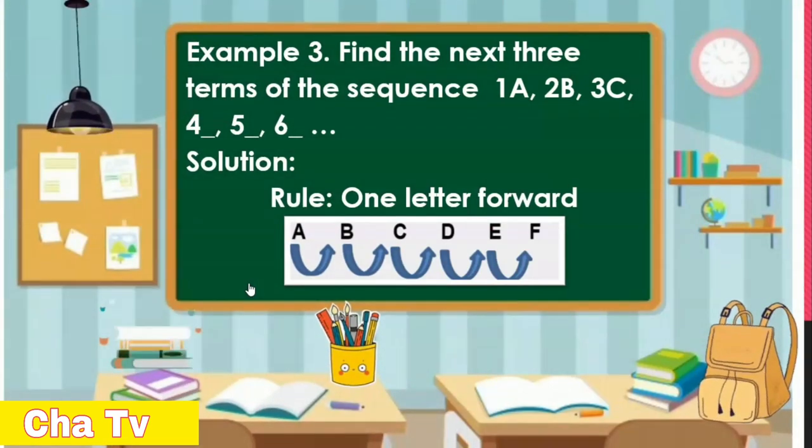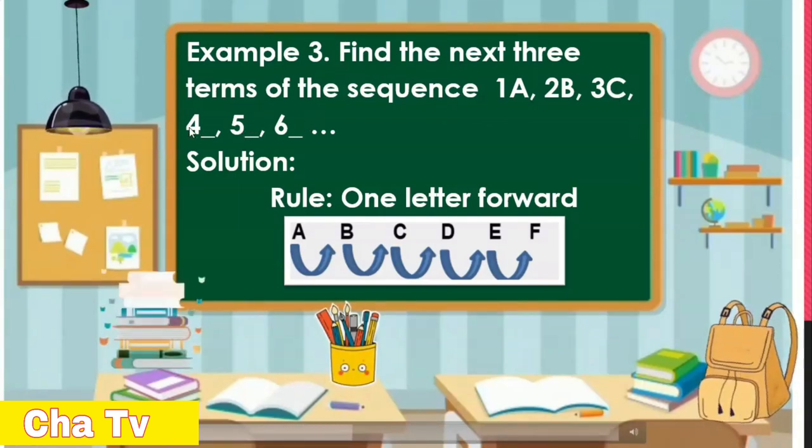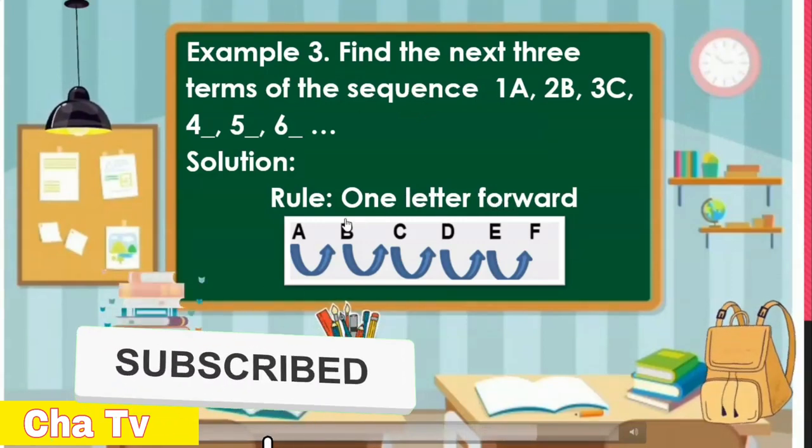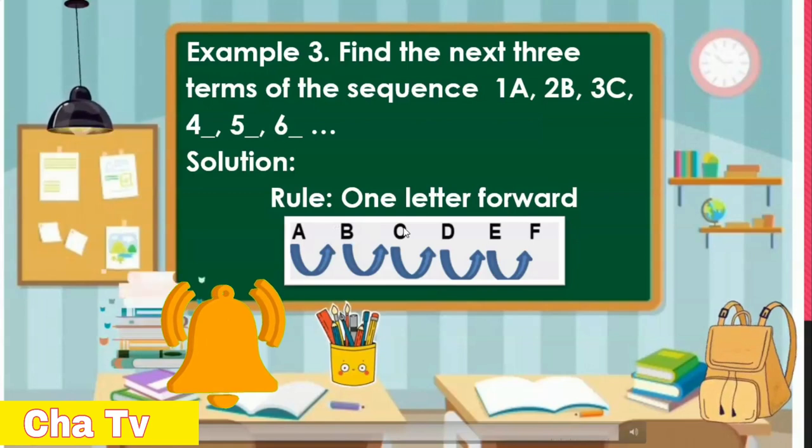Another example: Find the next three terms of the sequence 1A, 2B, 3C, 4 blank, 5 blank, 6 blank. So the rule for this problem: add one number and one letter. We add letters A, B, C, 4D, 5E, and 6F.